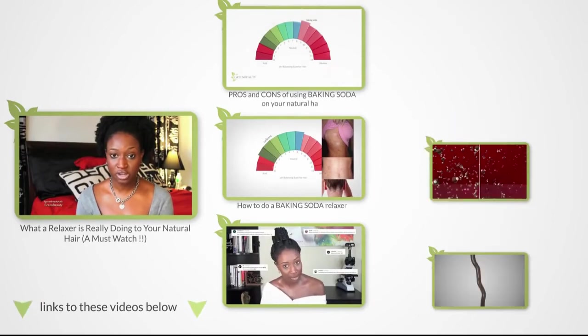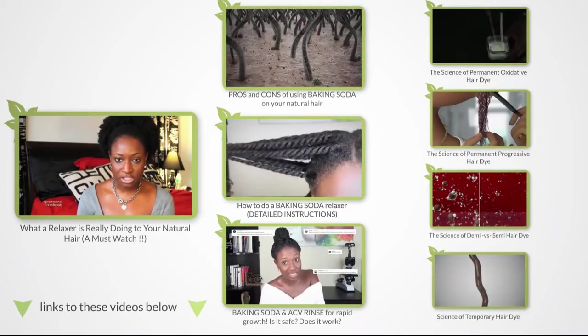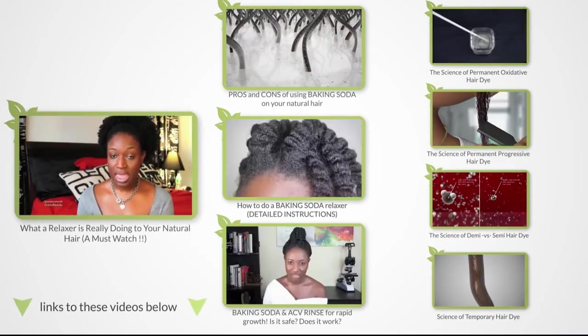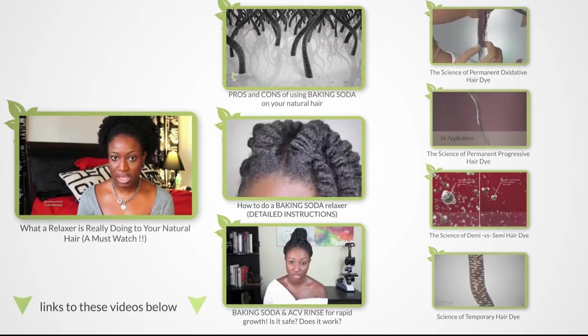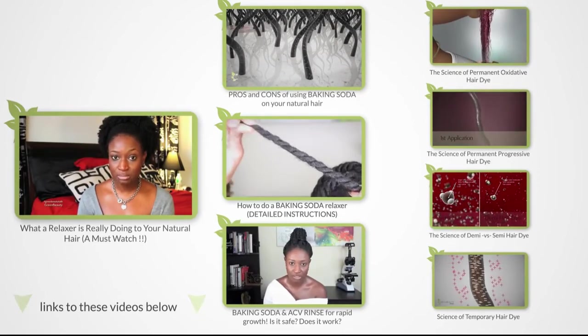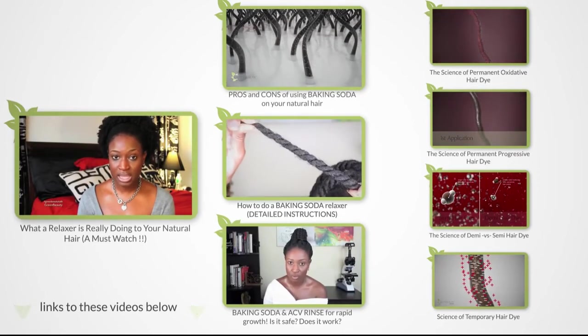Some examples of chemicals that can permanently change your curl pattern are relaxers, baking soda, and hair dyes. Below are videos on these three chemicals and details on how they work.